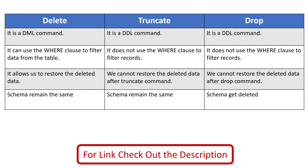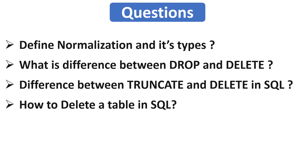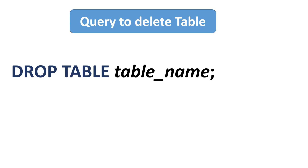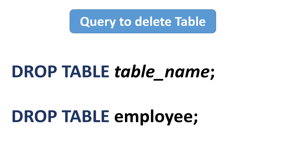Our next question is: how do you delete a table in SQL? Deleting a table means removing the complete table, not only the data — the schema is deleted along with the data. The query to delete a table is DROP TABLE followed by the table name. For example, if your table name is employee, the query will be DROP TABLE employee. This query works in MySQL, Oracle, and SQL Server.